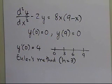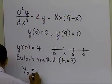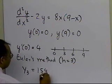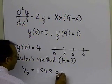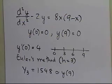Based on that, what we obtained was that the value of y₃ which we got was equal to 15.48, and that is the approximate value of y at 9, which we got by using Euler's method with step size of 3.